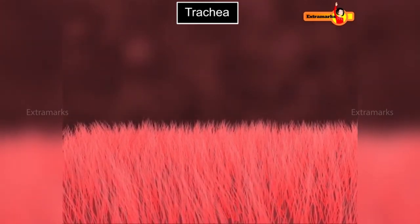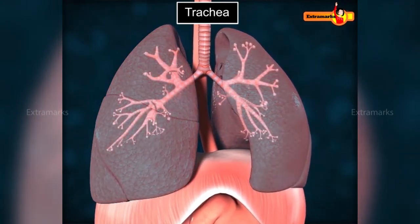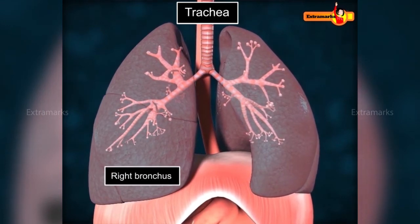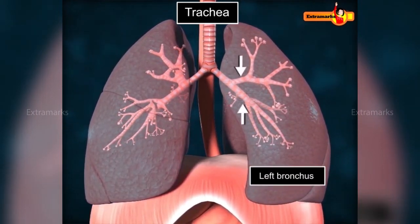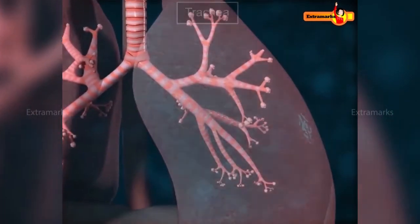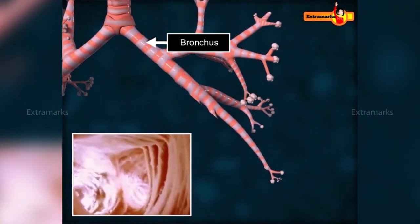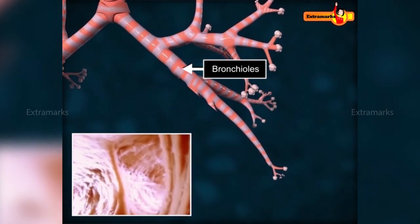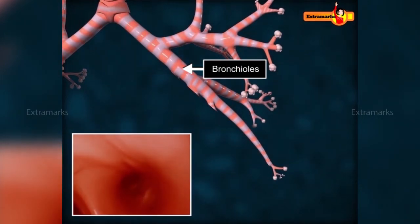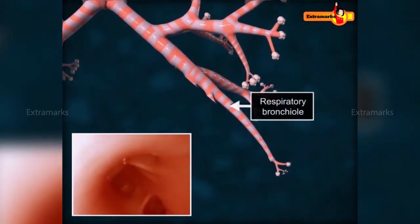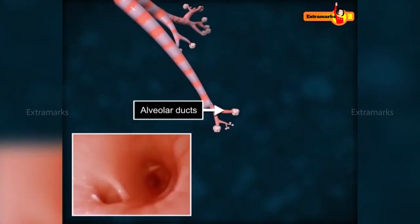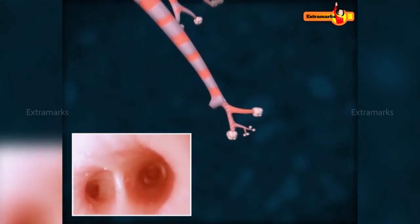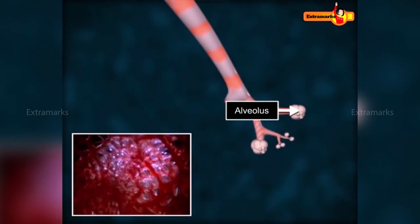The trachea divides into two branches called bronchi. The right bronchus enters the right lung and divides into three smaller bronchi, while the left bronchus enters the left lung and divides into two smaller bronchi. Each bronchus re-divides into smaller branches called bronchioles, which form a network of branching tubes. Bronchioles further branch into respiratory bronchioles, which divide to form alveolar ducts, each leading into air sacs called alveoli — the terminal end of the respiratory tree.